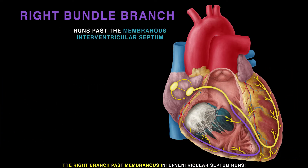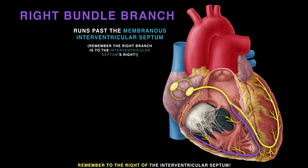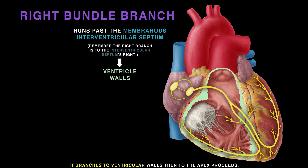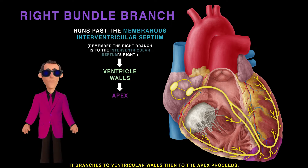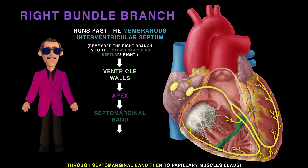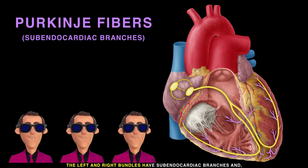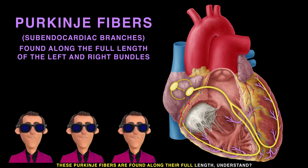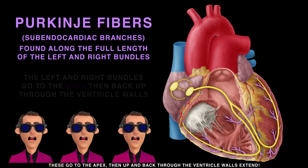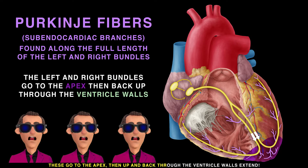The left bundle also serves the interventricular septum and left ventricle walls. The right bundle branch runs past the membranous interventricular septum, to the right of the interventricular septum, branching to the ventricular walls then proceeding to the apex, through the septomarginal band to the papillary muscles. The left and right bundles have subendocardial branches, and Purkinje fibers are found along their full length.